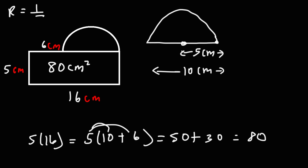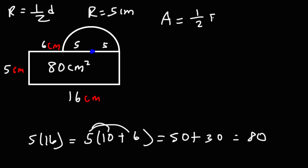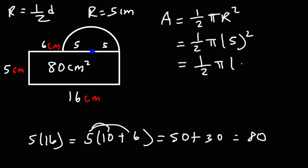The radius is always half of the diameter. This is the center of the semicircle — this part is 5, and this is 5. So 5, 5, and 6 adds up to 16. Now that we know the radius of the semicircle is 5 centimeters, we can calculate the area of the semicircle, which is 1/2 pi r squared. Plugging in 5 for the radius: 5 squared is 25, and half of 25 is 12.5. So the area of the semicircle is 12.5 pi square centimeters.